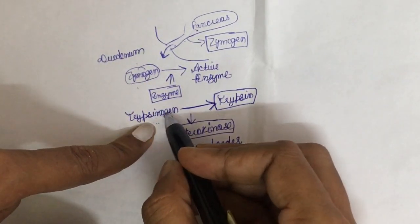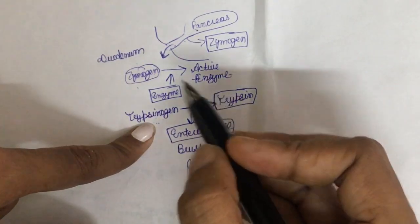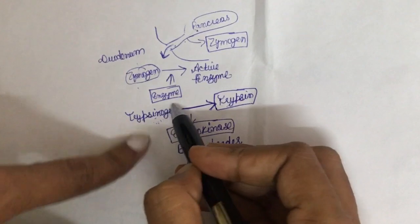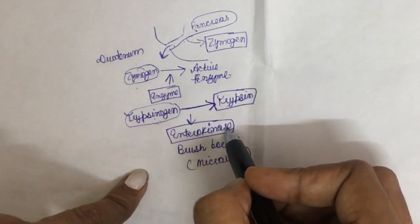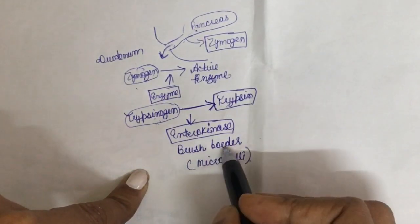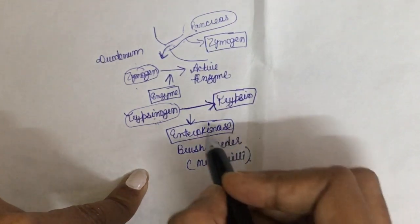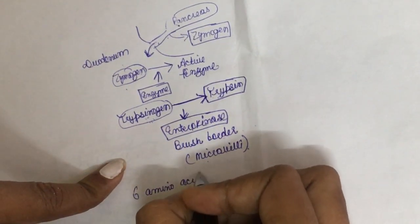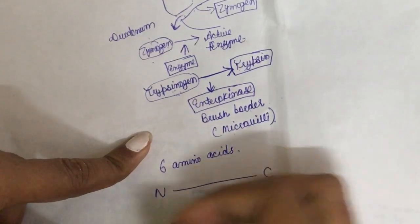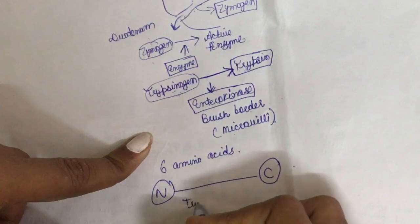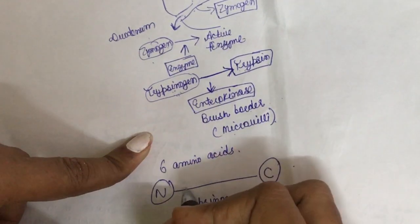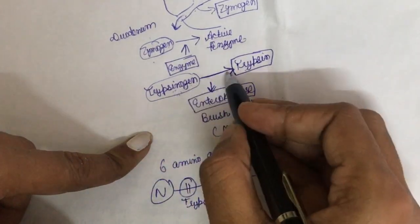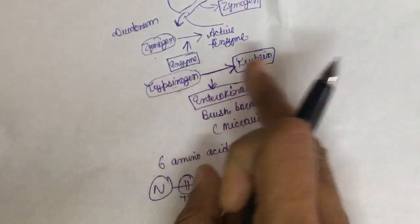Trypsinogen is the first zymogen that gets converted into trypsin, and trypsin then helps in the activation of other enzymes. When trypsinogen enters the gastrointestinal tract, it is acted upon by enterokinase. Enterokinase is also called a brush border enzyme — brush border is another term for microvilli. Enterokinase cleaves six amino acids from the N-terminus of trypsinogen, and after the removal of these six amino acids, trypsinogen gets converted into trypsin.